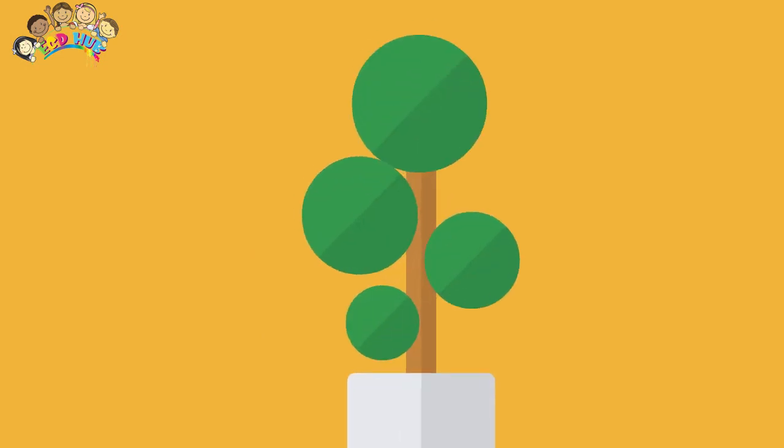In temperate climates, and tropical climates with a single wet-dry season alternation, the growth rings are annual, each pair of light and dark rings being one year of growth. In areas with two wet and dry seasons each year, there may be two pairs.